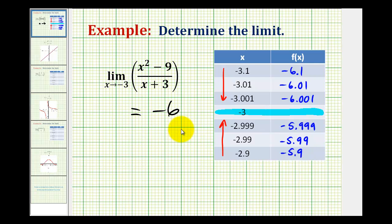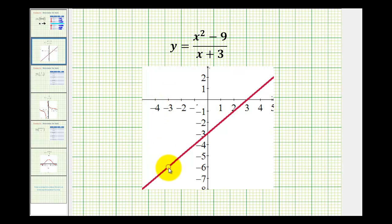And while we're here, let's go ahead and take a look at the graph of this as well. So we're approaching x equals negative three, right where this hole is.